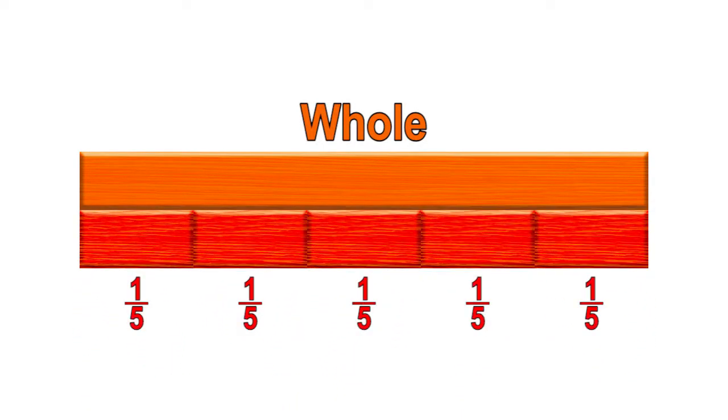In the next example, the orange rod represents the whole. Each red rod represents one-fifth of the whole. To make the whole, we need five one-fifth rods. Five copies of one-fifth are equal to the fraction five-fifths.